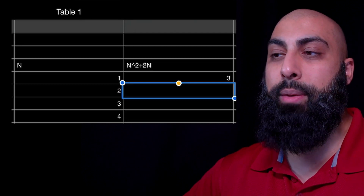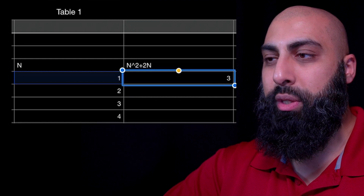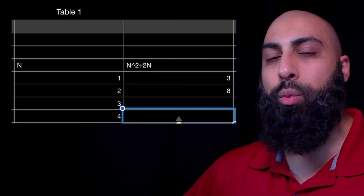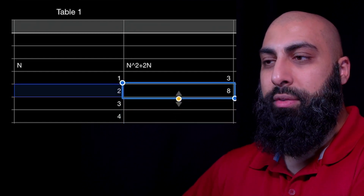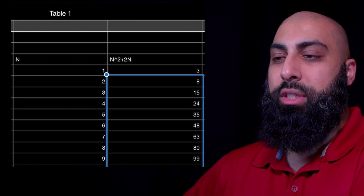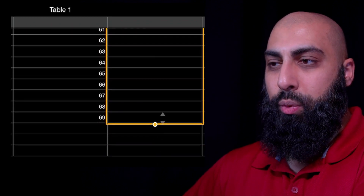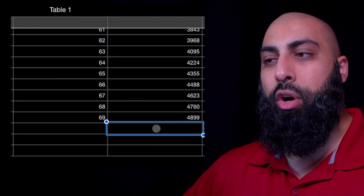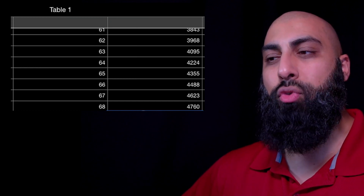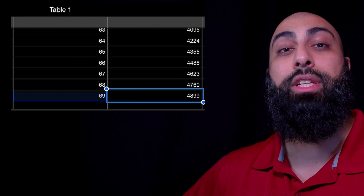That gives us 3 for the first term of the sequence. If we drag this down we get 8 cards for 2 stories, and as we keep dragging all the way to 69, the quadratic sequence continues. These are the number of cards required for each story of the house of cards. And this is what we worked out in the previous video — which was wrong. It's 4,899 for the 69th story.